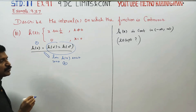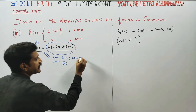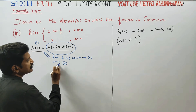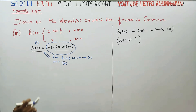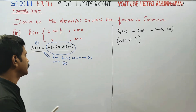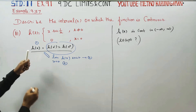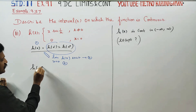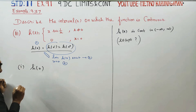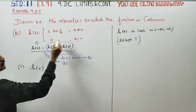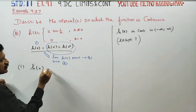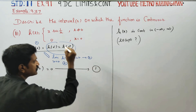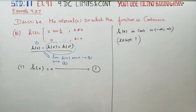Result 1: h(0) is equal to 0. Result 2: the limit as x tends to 0 of h(x) is equal to 0. This is my result number 1.